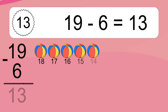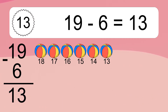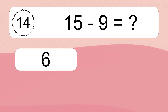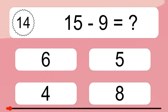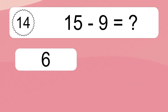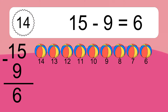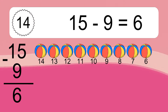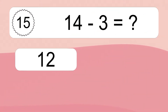19 minus 6 equals what? 19 minus 6 equals 13. Let's count it: 18, 17, 16, 15, 14, 13. 15 minus 9 equals what? 15 minus 9 equals 6. Let's count it: 14, 13, 12, 11, 10, 9, 8, 7, 6.